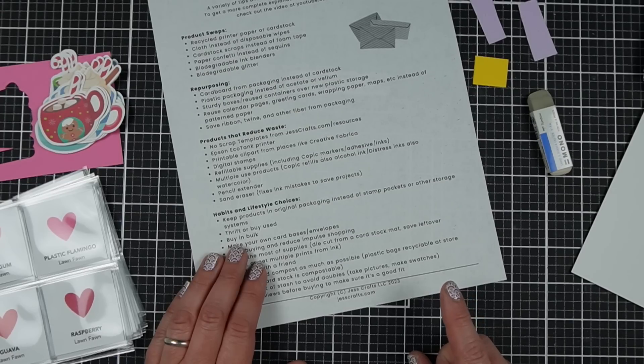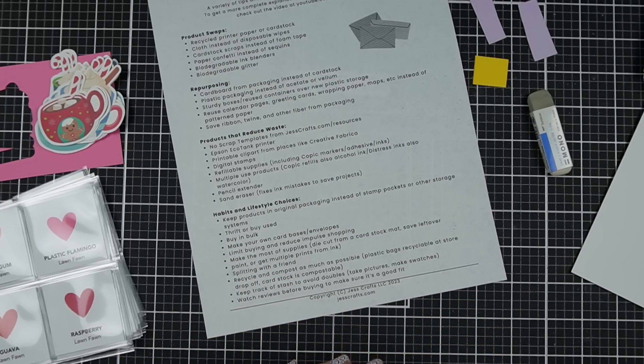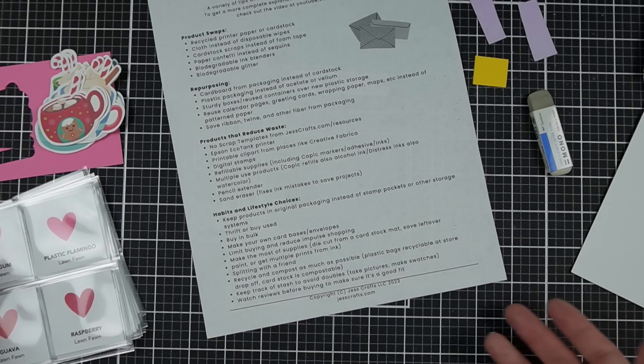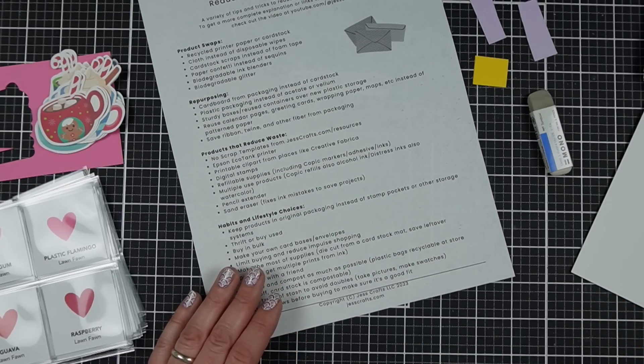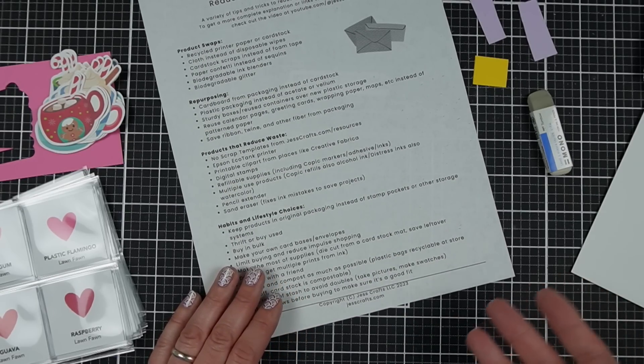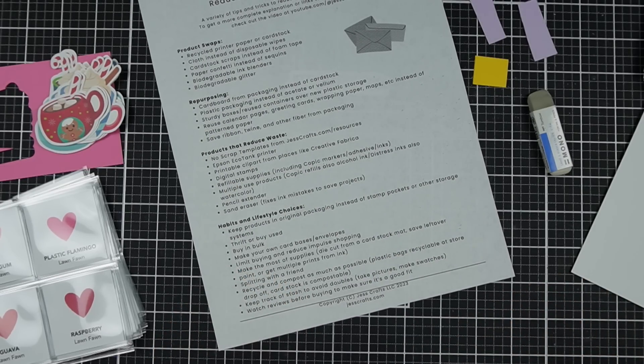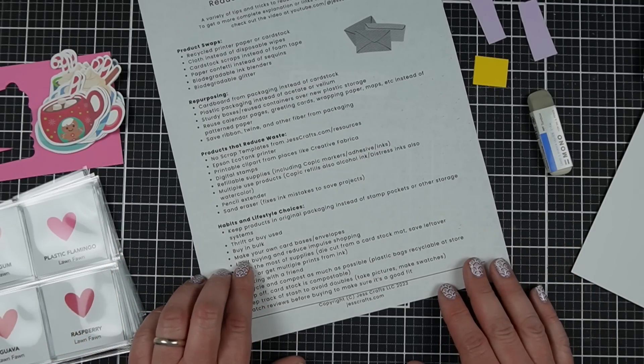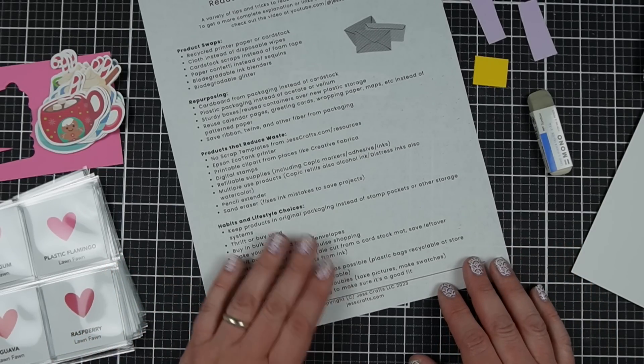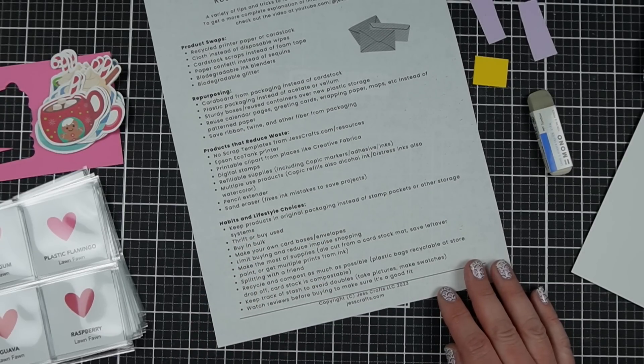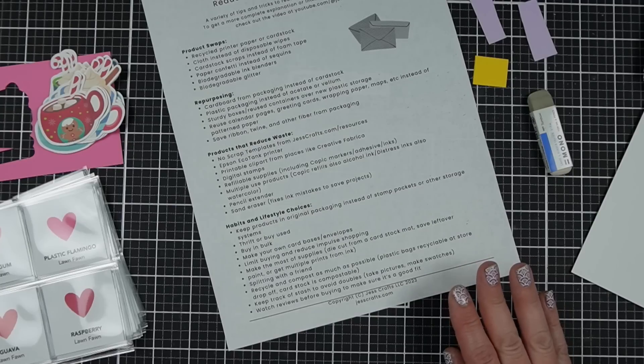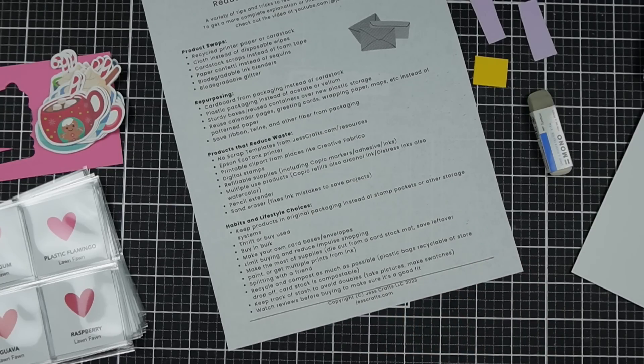Buying in bulk. I think this is really important because it reduces the overall amount of packaging. So if you know you use something a lot, rather than getting it shipped to you once a month, getting it shipped to you once a year by buying a bunch of it. I in particular like to buy envelopes in bulk. Making your own card bases and or envelopes. So I don't really make my own envelopes very often, but I do. I know many people do. And I think it's a great idea.